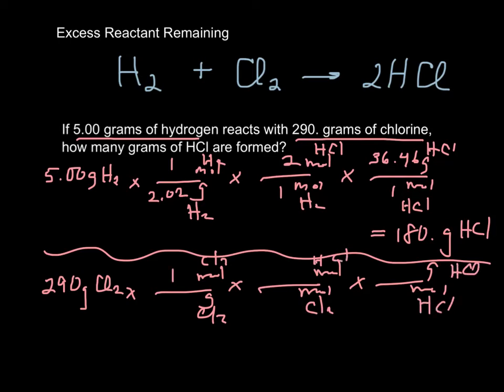So 1 mole of chlorine, which is Cl2, weighs 70.9. The mole ratio is 2 to 1, still weighs 36.46. So this is going to make 298 grams of HCl.